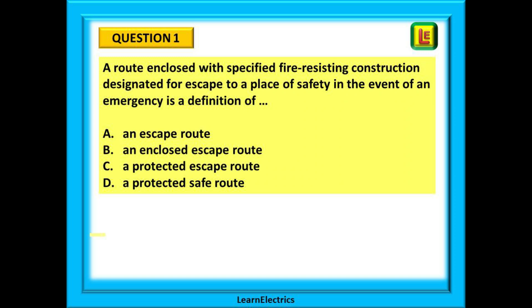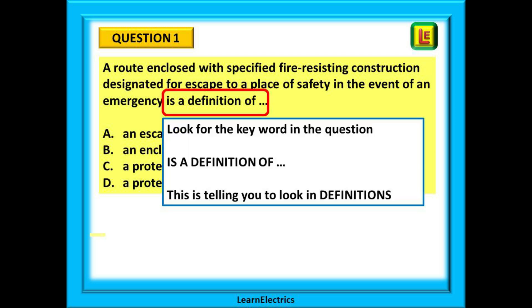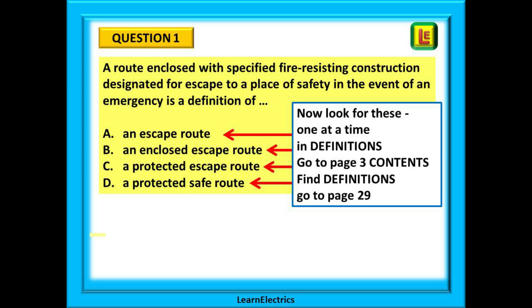Here is the first question. A route enclosed with specified fire-resisting construction designated for escape to a place of safety in the event of an emergency is a definition of something, and there are four possible answers with only one correct. Look for the key word in this question, which is the phrase 'is a definition of' — it is telling us that the answer is in the definitions part of the book. Go to page 3, the main contents page. Near the top of that page is Part 2, definitions, which begins on page 29.